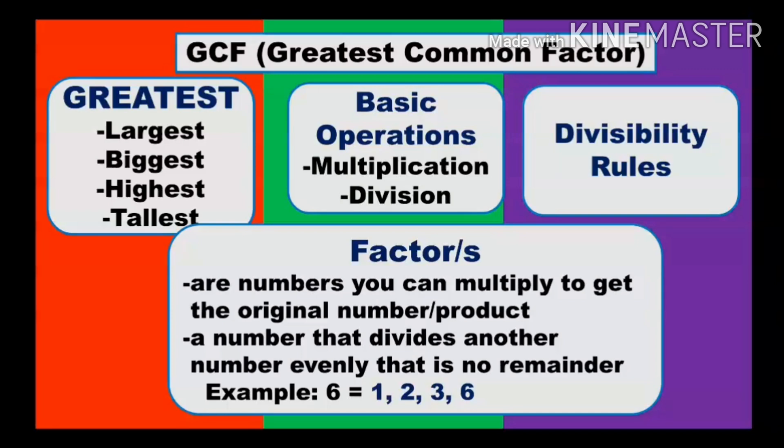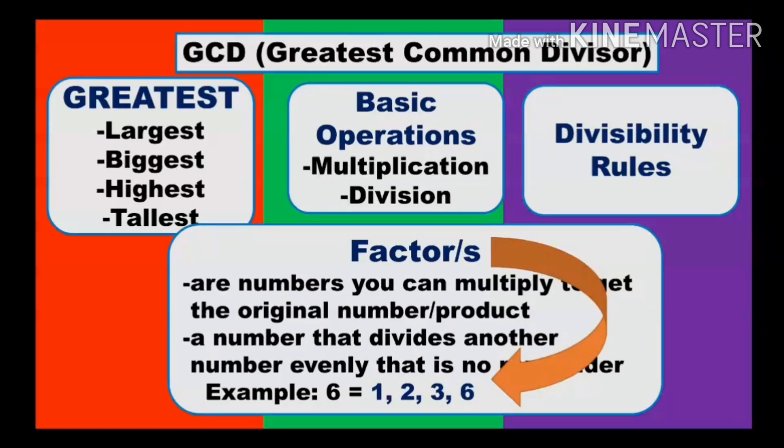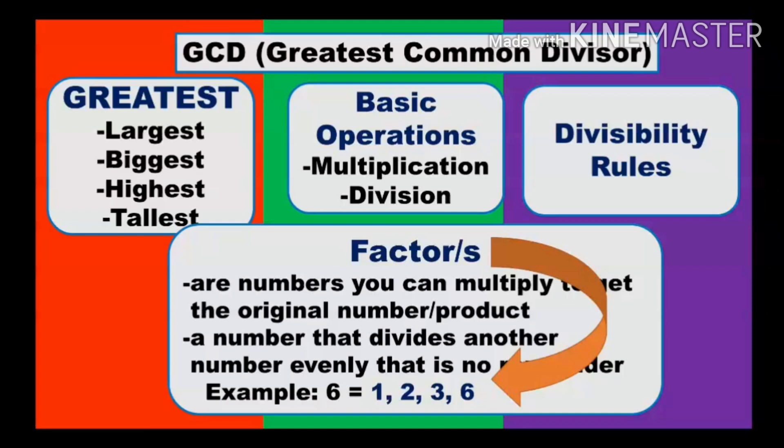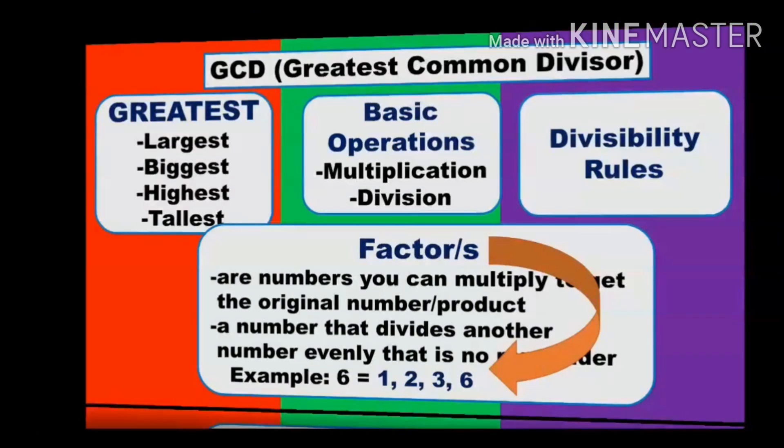Another example: a number factor is a number that divides another number evenly, that is no remainder. So what do you call the number? Divisor. Therefore, sometimes factor is called as divisor or factor is exactly a divisor. Now, let's try and divide. If there is no remainder: 6 divided by 1, we have 6; 6 divided by 2, 3; 6 divided by 3, 2; 6 divided by 6, 1. So there is no remainder. Therefore, factor is also divisor. Sometimes, greatest common factor is also known as GCD, Greatest Common Denominator.